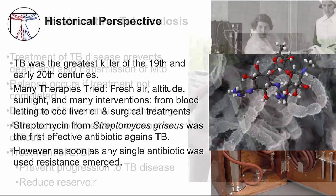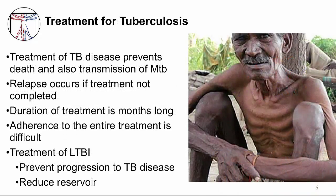Let me give you some general principles about TB treatment. On a public health level, the rationale for treating TB disease is to prevent transmission of MTB. On an individual level, the rationale is to prevent death. One of the reasons why TB is so prevalent is that the treatment regimen is not easy — an infected person has to take many medications for many months, so adherence to the entire course is difficult.